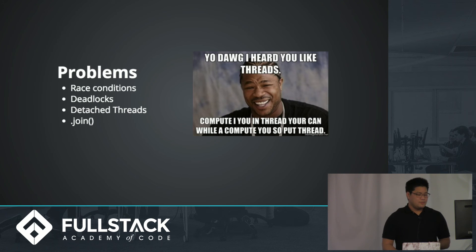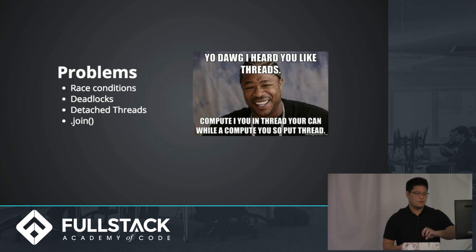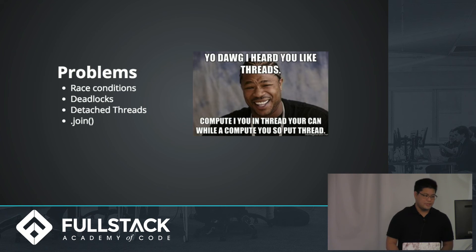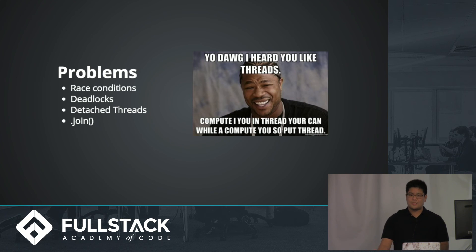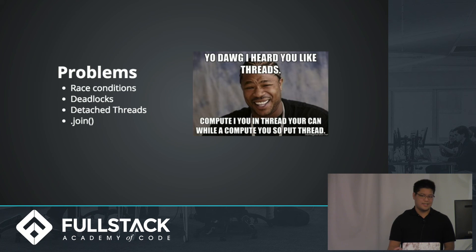Deadlocks are kind of a race condition where if two threads need to access the same piece of data, and one is holding it and never releases it, the second one will never process. So that in itself is a huge problem — make sure the safeguards are there. Also, detached threads are threads that we're not tracking anymore. They are processing stuff but they're threads we don't manage, and if you accidentally fire one off that you need to access again, you're never going to get it again. So don't do that.